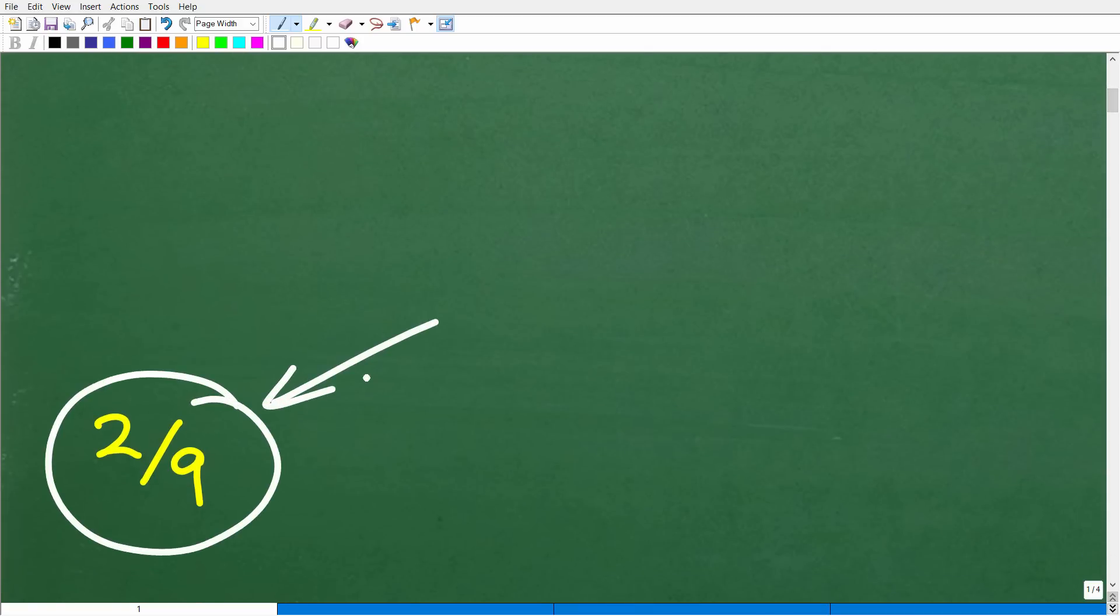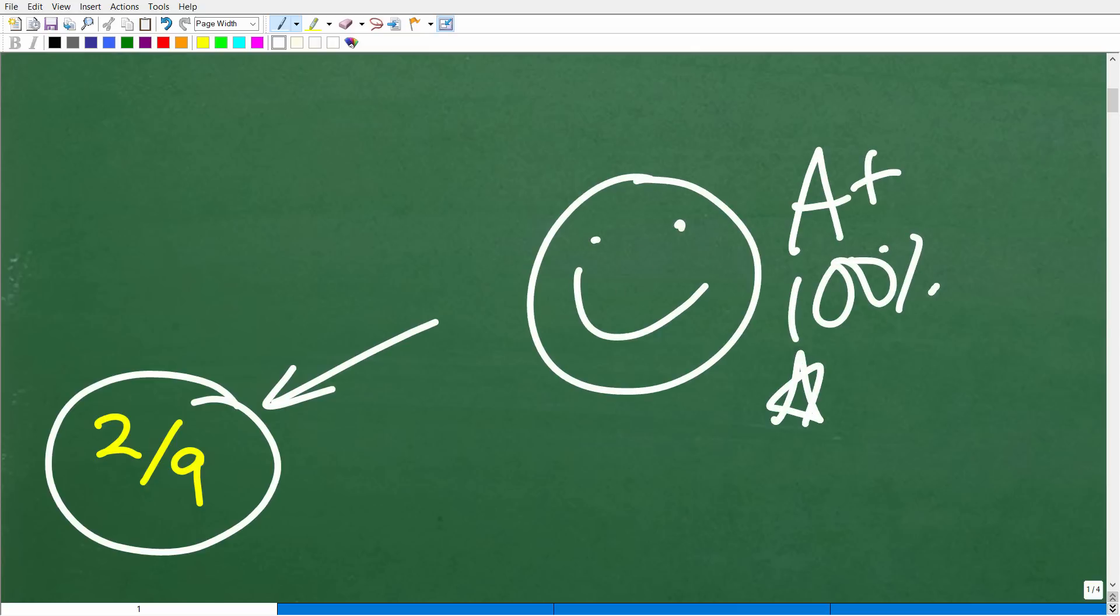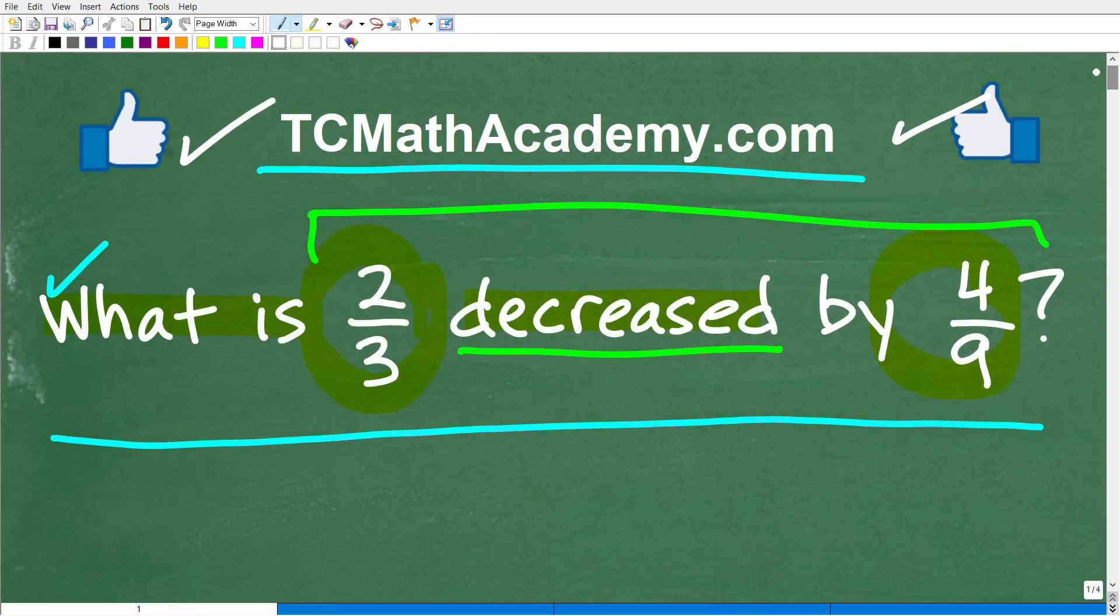Okay, so how did you do? Well, if you got this right, we have to celebrate by giving you a nice little happy face and a plus 100% and multiple stars. So you can tell your friends and family that indeed you are a professional certified expert in the area of subtracting fractions, because that's what we're going to be doing here. So we're going to take this value, which is two-thirds, and we're going to lower it or decrease it, or we're going to subtract away this amount from it. Okay, so that's what this word decreased means. It implies subtraction.